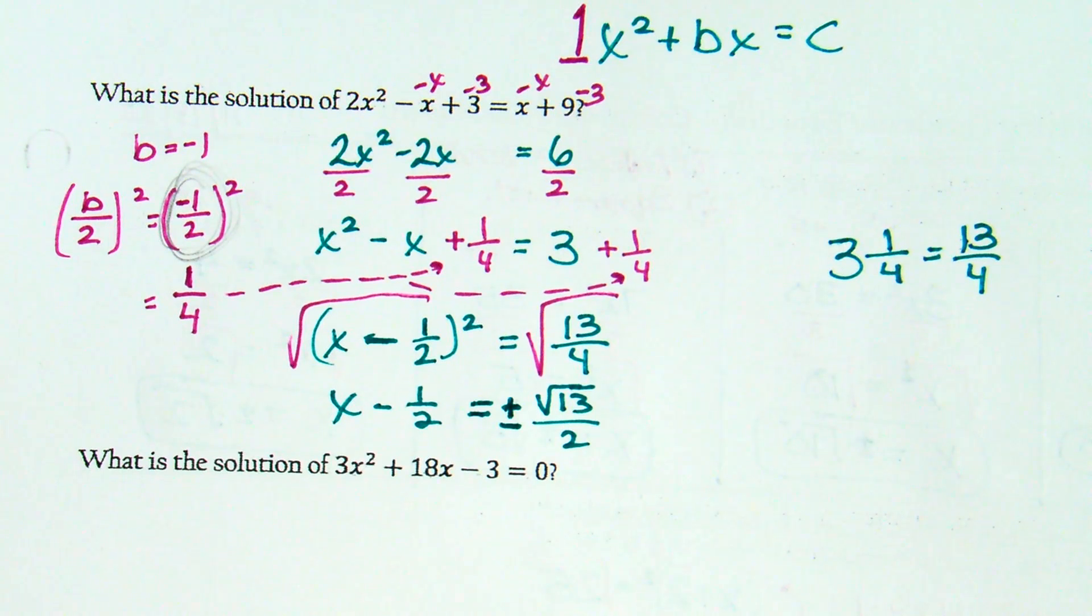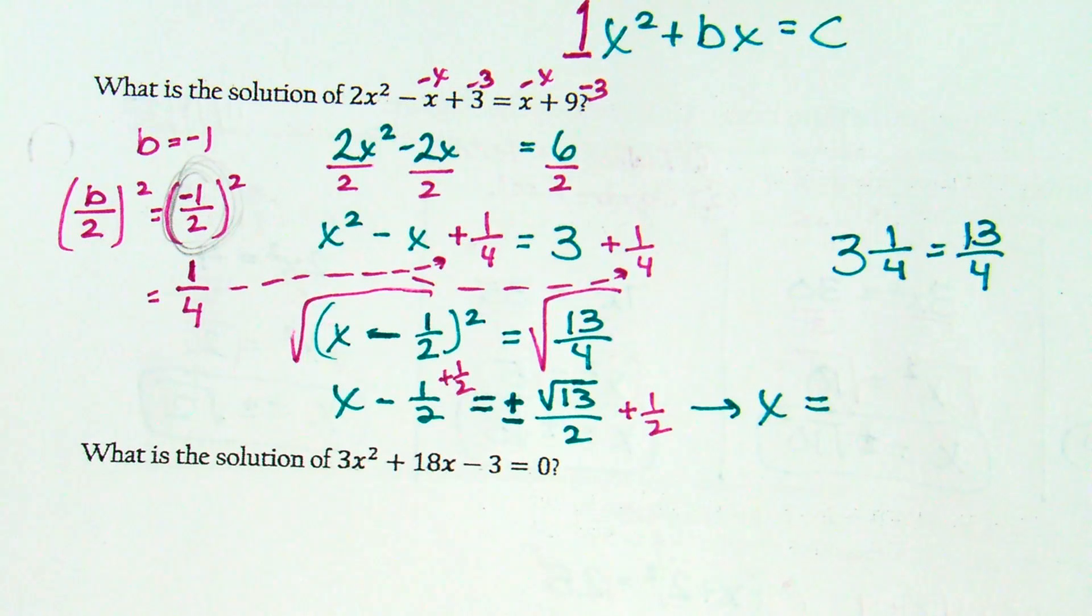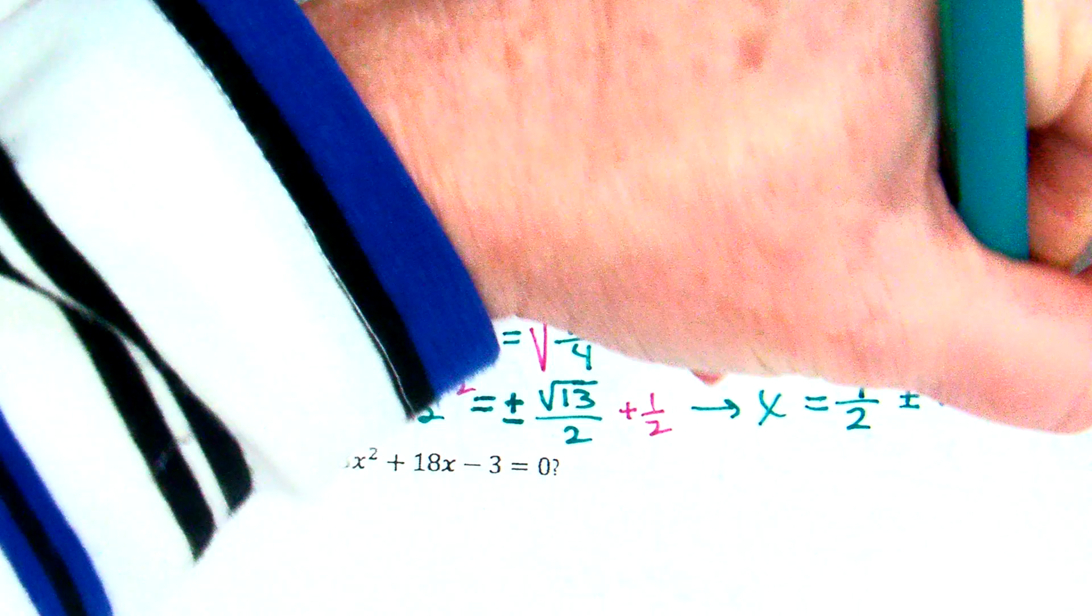So, we now have x minus 1 half equals plus or minus square root of 13 over 2. They're not all fractions, okay? I know, fractions aren't the fun part, but it's doable. And actually, we're past all the hard stuff. What is step 5? Solve for x. So, how do I solve for x? If it's x minus 1 half, I'm going to add 1 half. And so, what do I get when I add 1 half here? How do you think I could write that? What do you think, AJ? Just put that plus or minus portion in the middle so that moves the 1 half out front. 1 half plus or minus square root of 13 over 2.